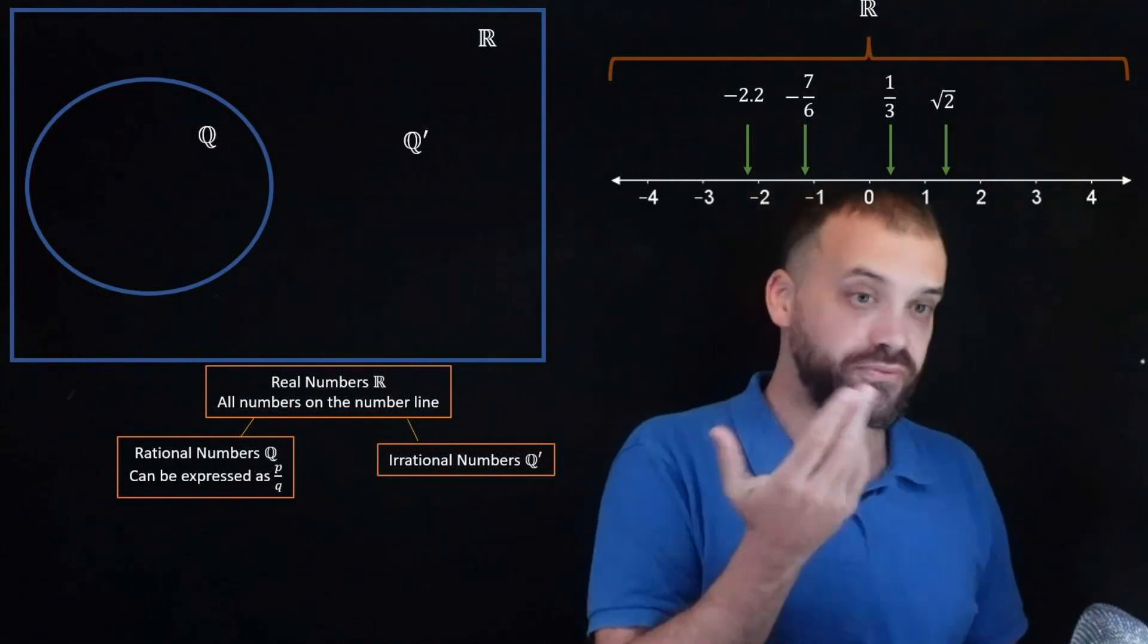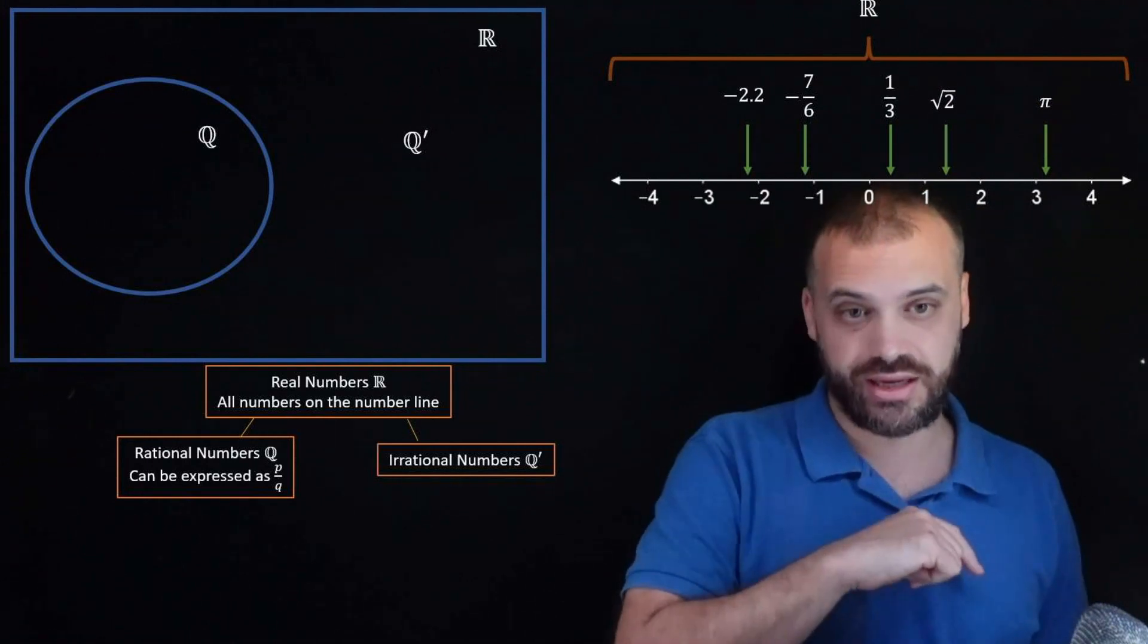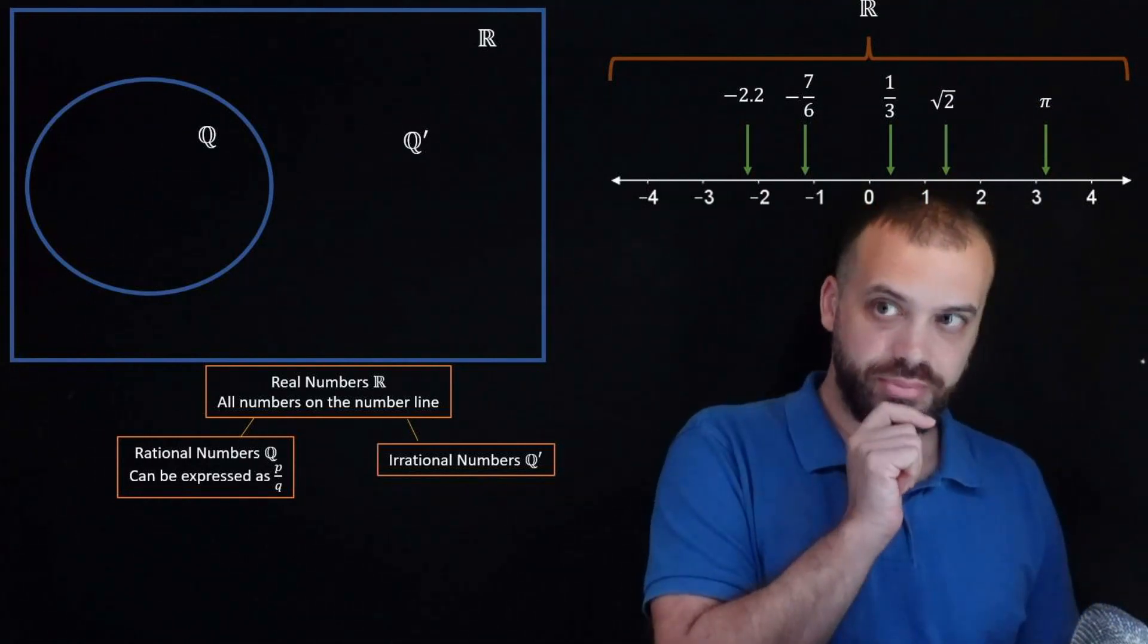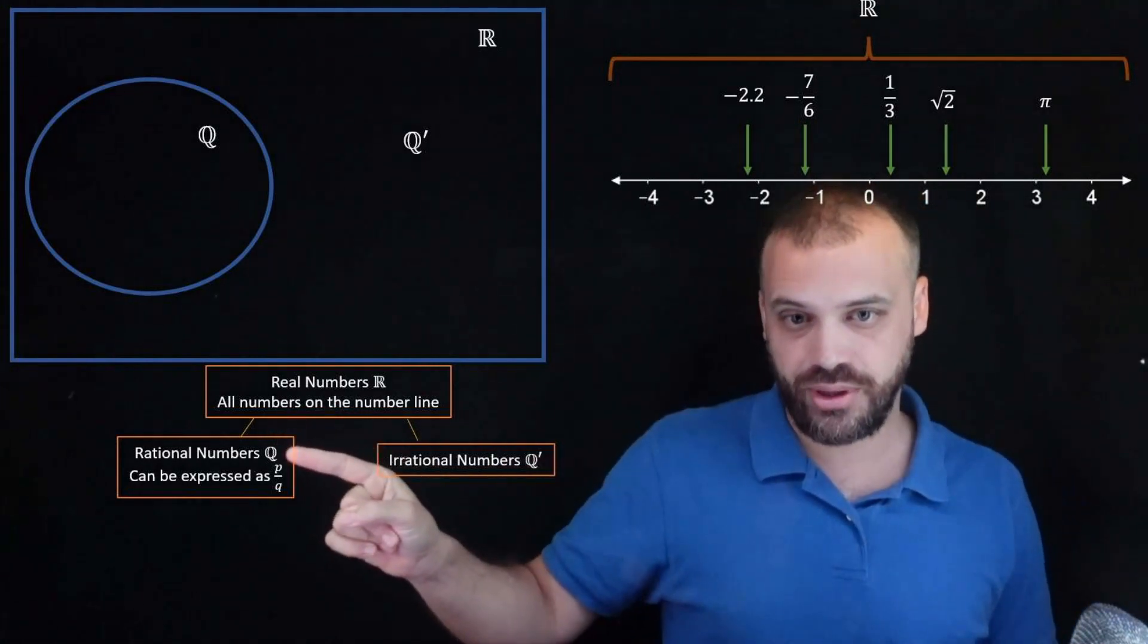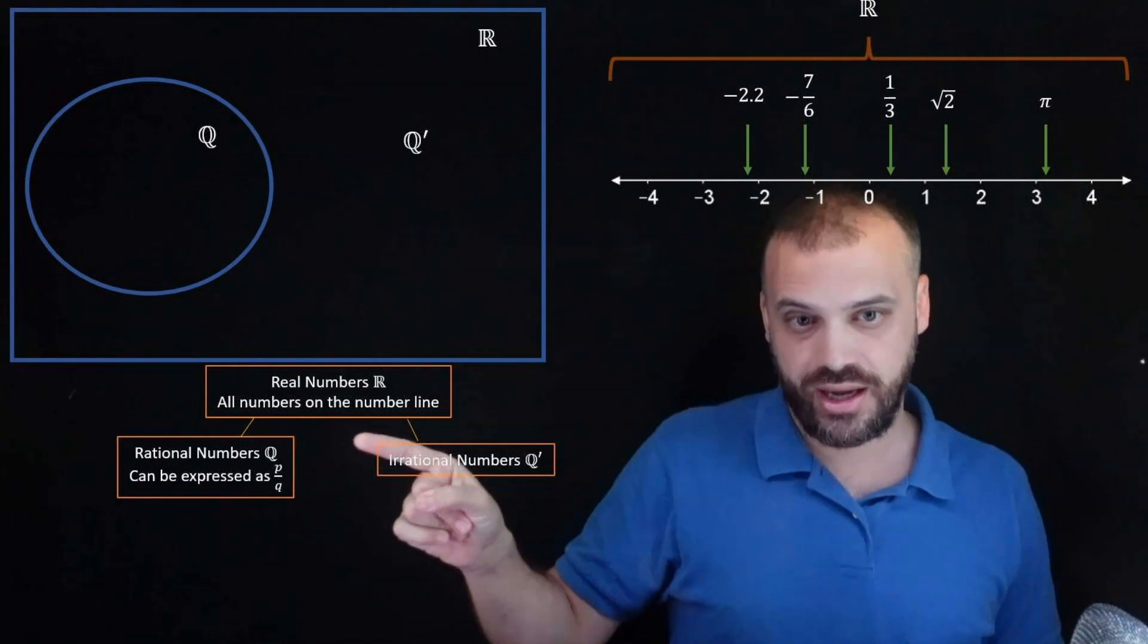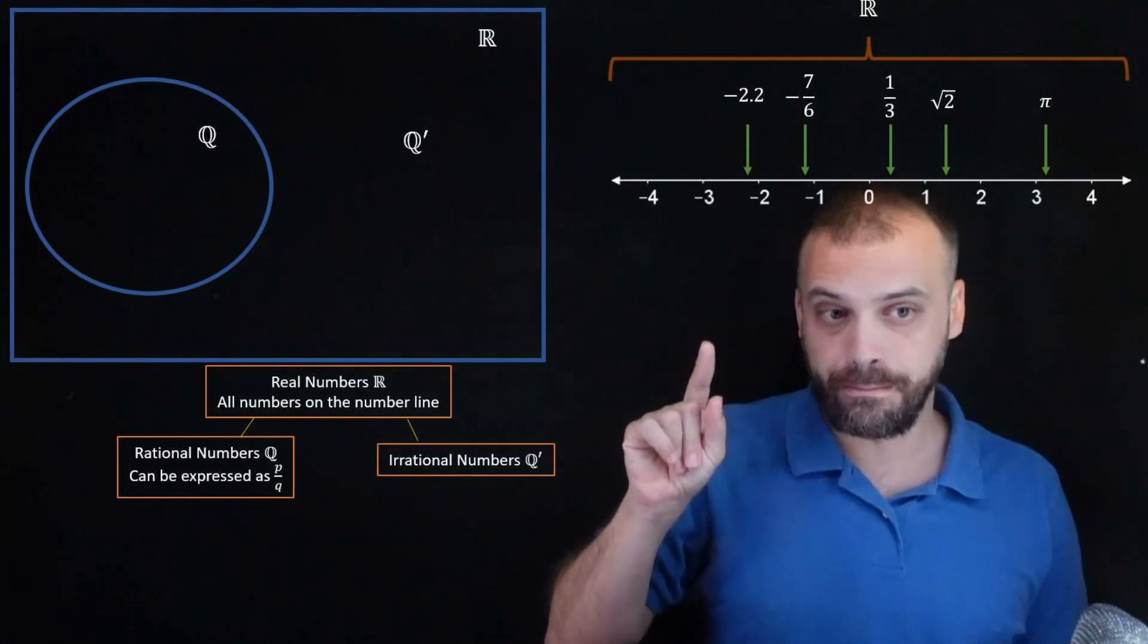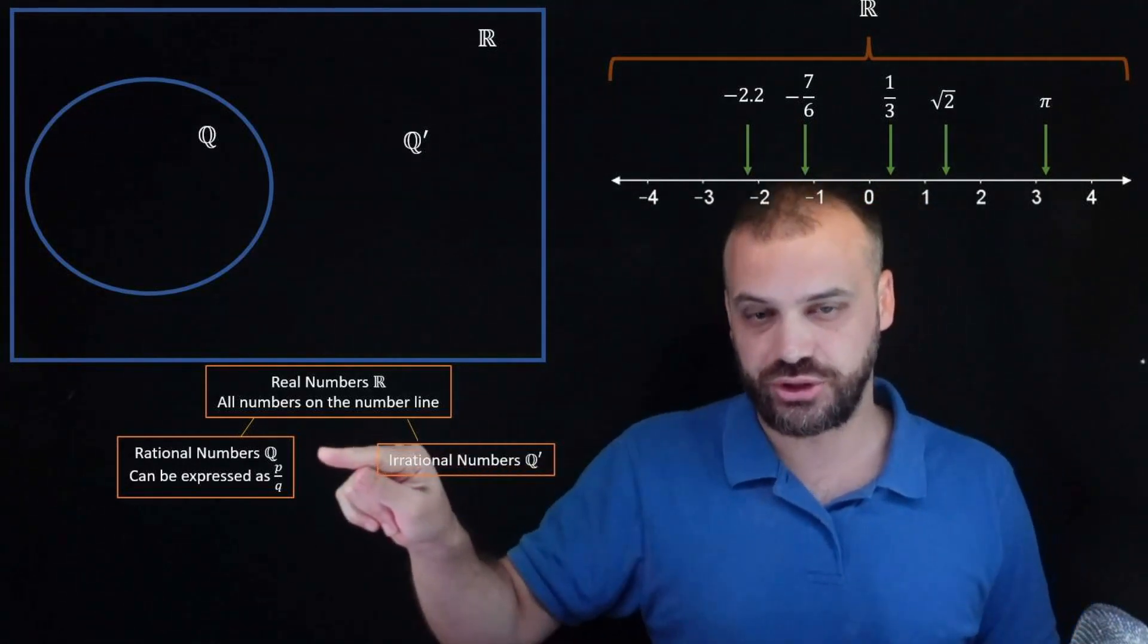Another one, a famous one, is pi. Pi cannot be expressed as a fraction. So these are irrational numbers. Perhaps unbelievably there are an infinite number of rational numbers and there are an infinite number of irrational numbers, but there are way more irrational numbers than rational numbers.